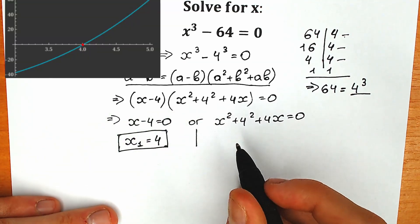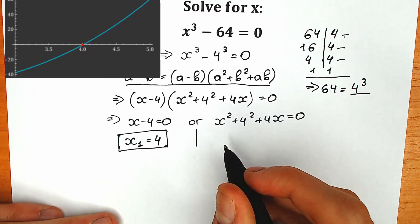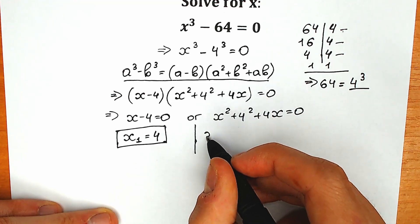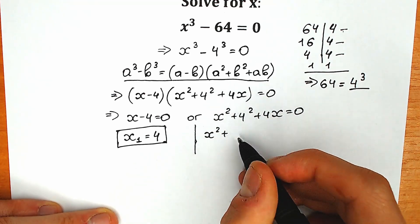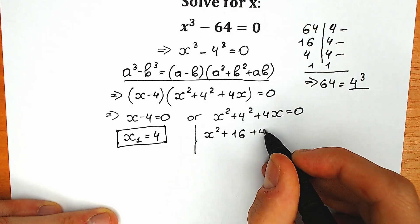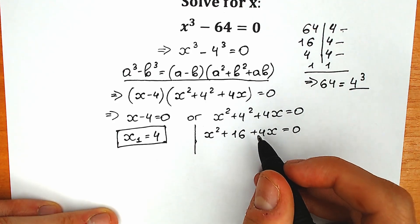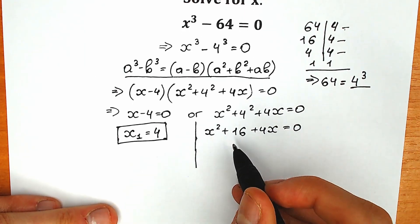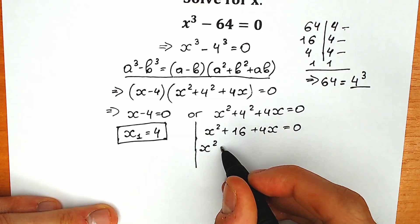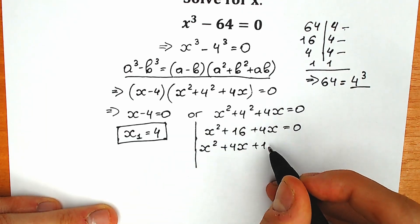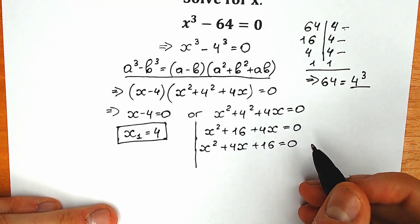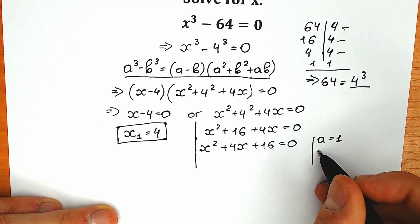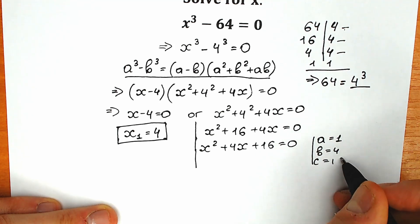Now let's look closely at our second equation — this is a quadratic equation. Let's simplify it: x-square plus 16 plus 4x equal to zero. We prefer 4x in the second position, so we have x-square plus 4x plus 16 equal to zero. Using the standard method with coefficients: a equals 1, b equals 4, and c equals 16.